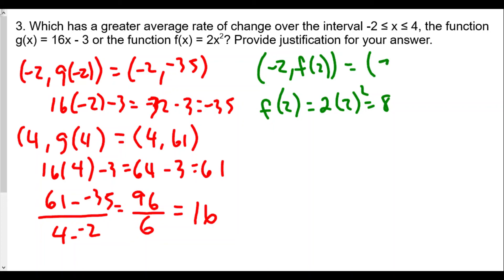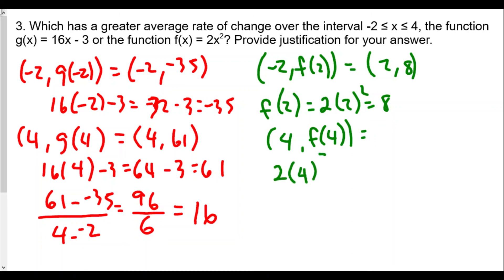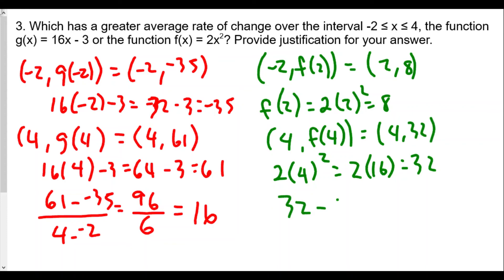The average rate of change for g(x) is 61 minus negative 35 over 4 minus negative 2, which is 96 over 6, equal to 16. For f(x), f(negative 2) equals 2 times (negative 2) squared equals 8, giving coordinate negative 2 comma 8. Then f(4) equals 2 times 4 squared equals 2 times 16 equals 32, giving coordinate 4 comma 32. The average rate of change for f(x) is 32 minus 8 over 4 minus 2, which equals 24 over 2, or 12.